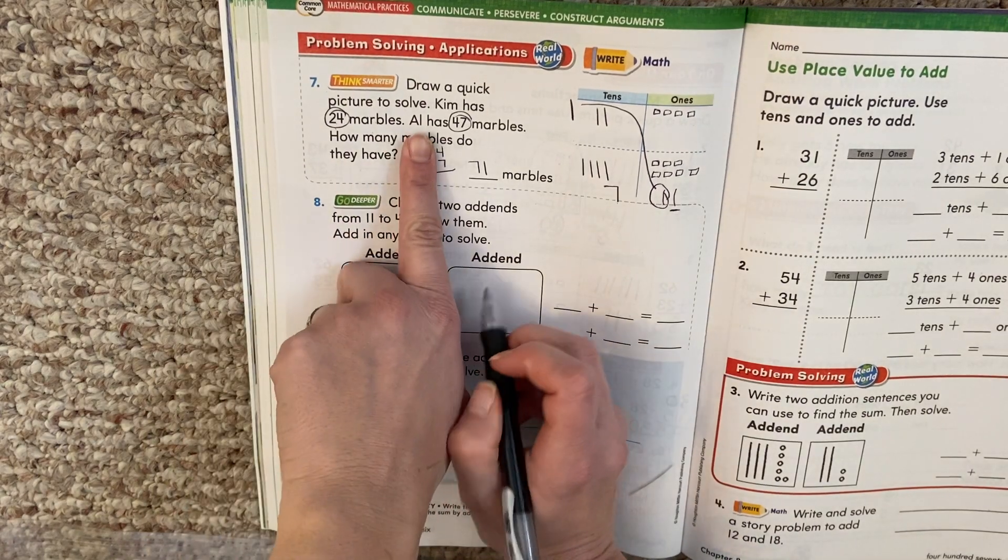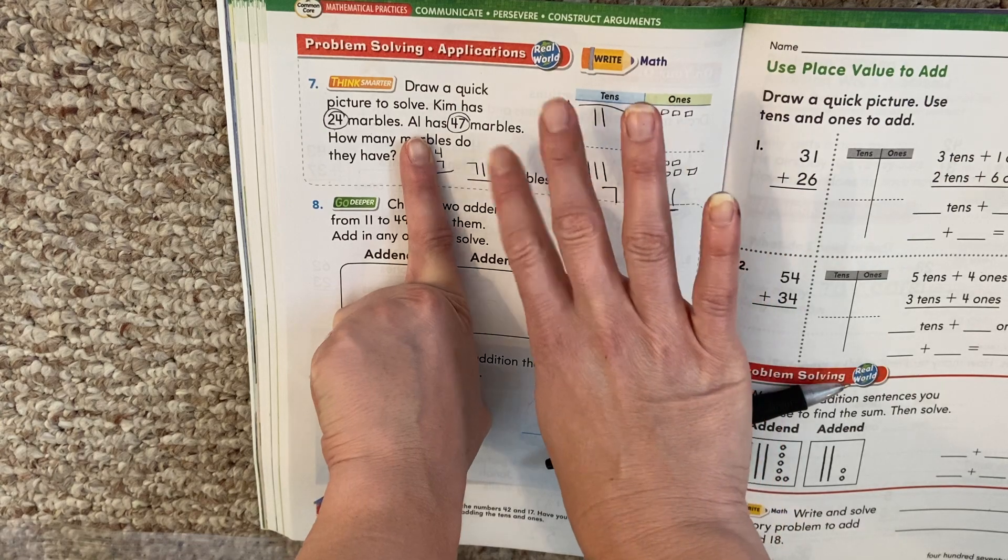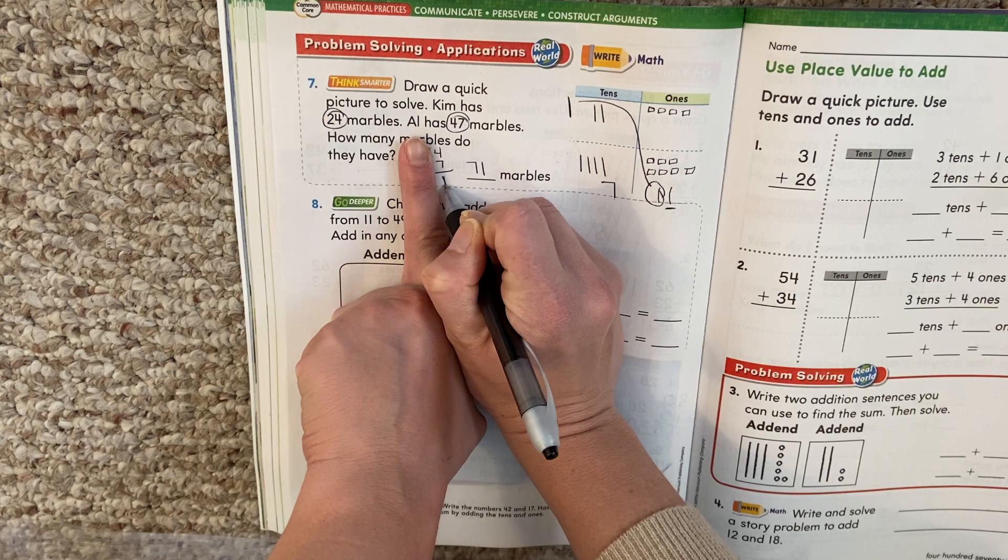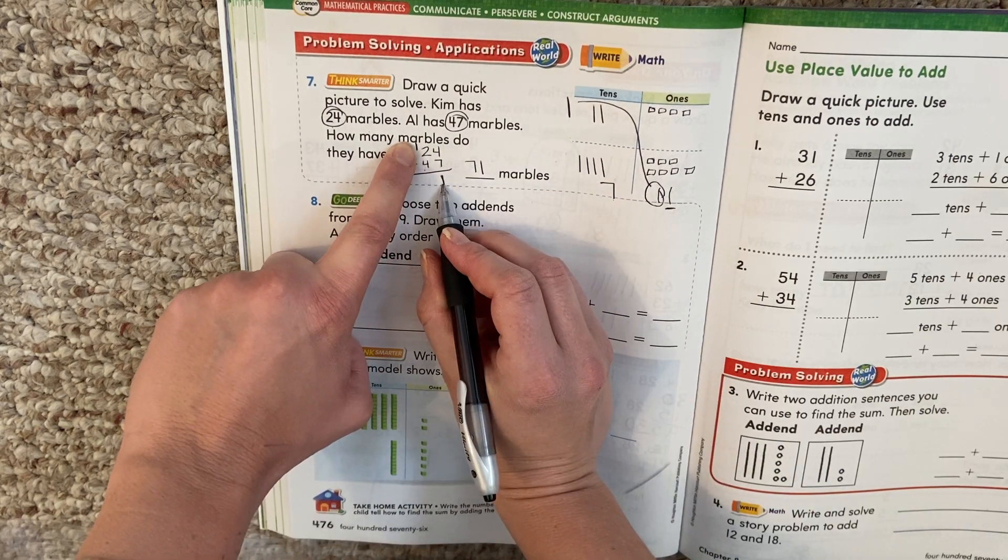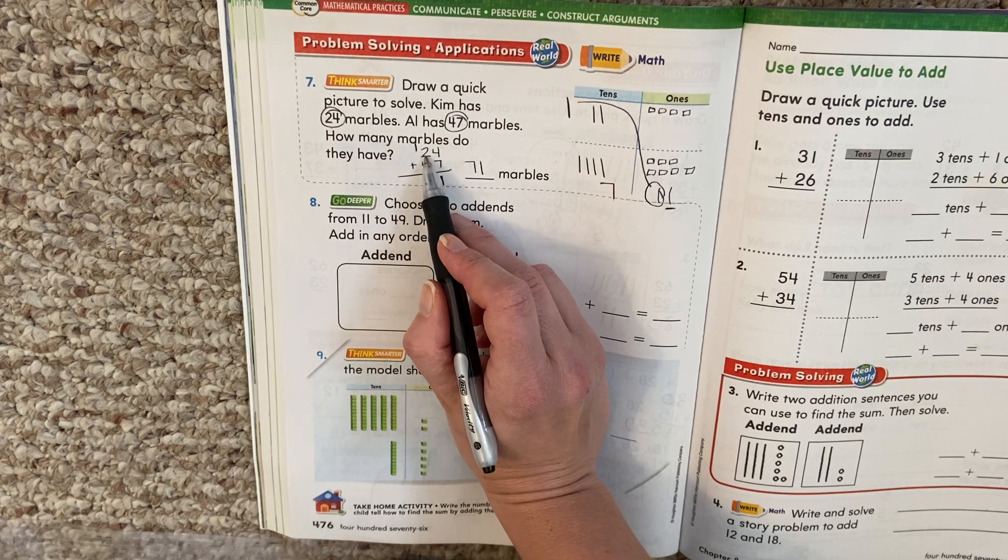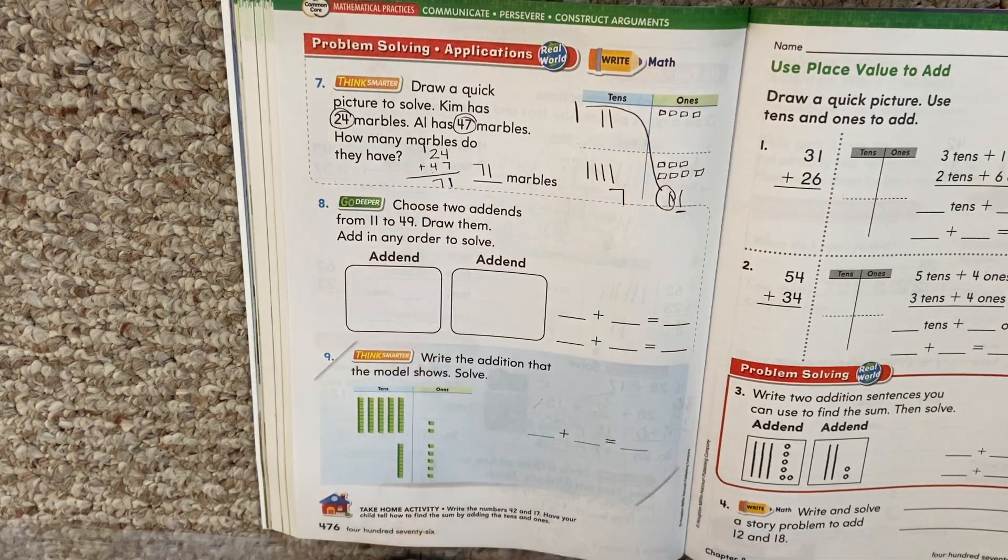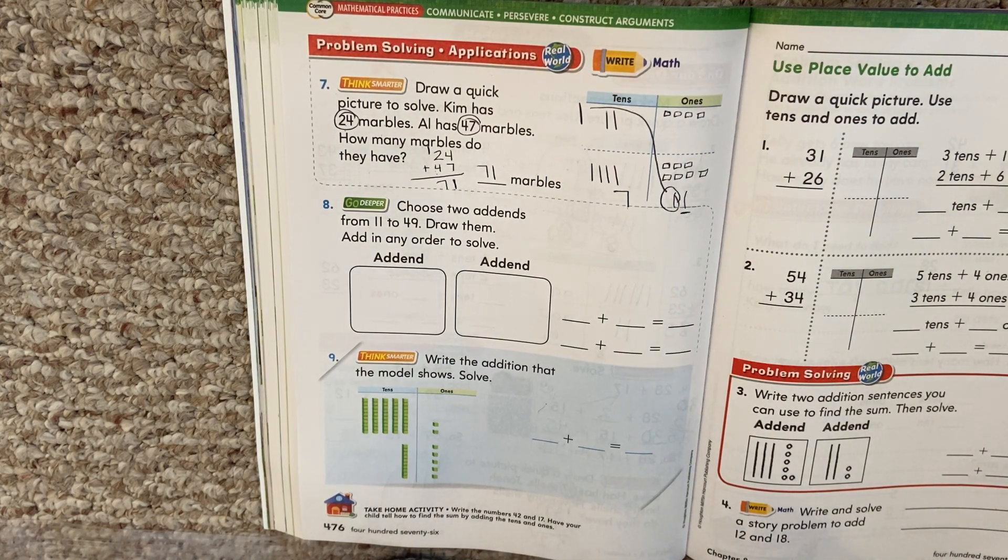And we see that here. Seven plus four. Seven, eight, nine, ten, eleven. We'd have to split that. One over here. One up here. Here's our number eleven. One plus two is three. Plus four more is seven. Seventy one. Same answer.